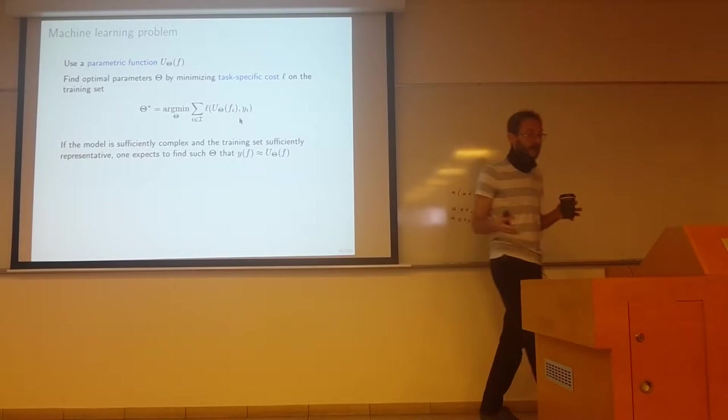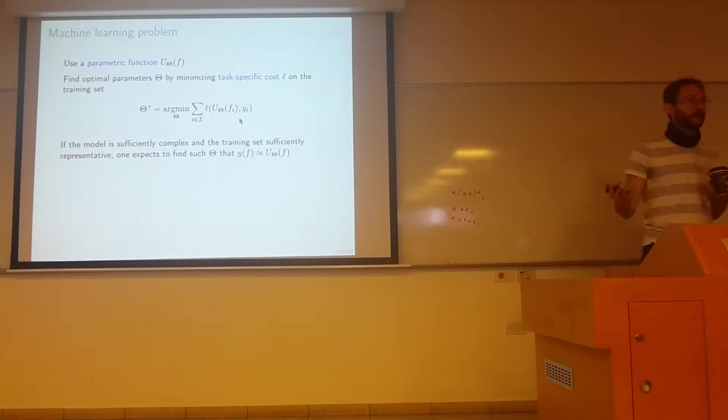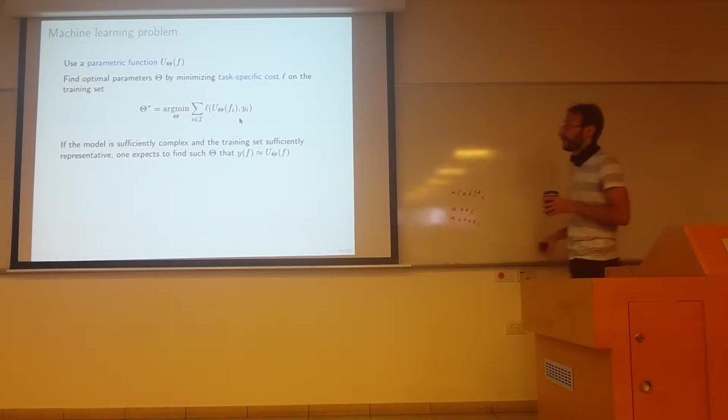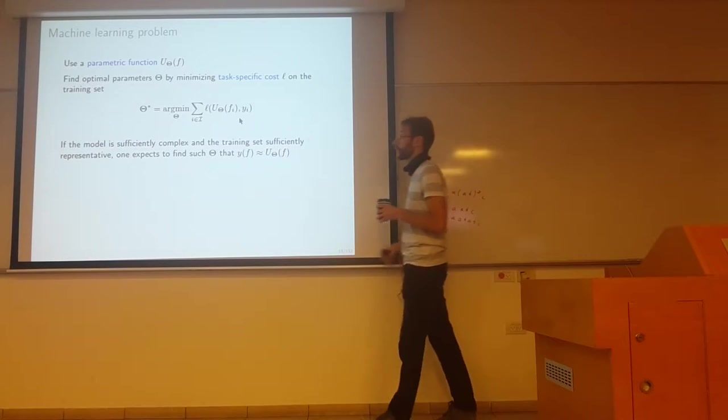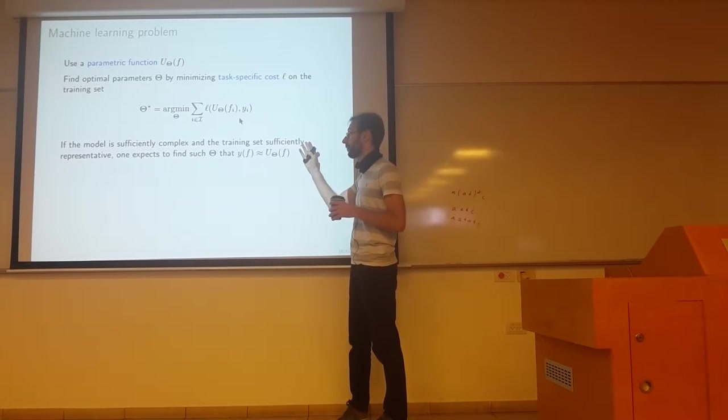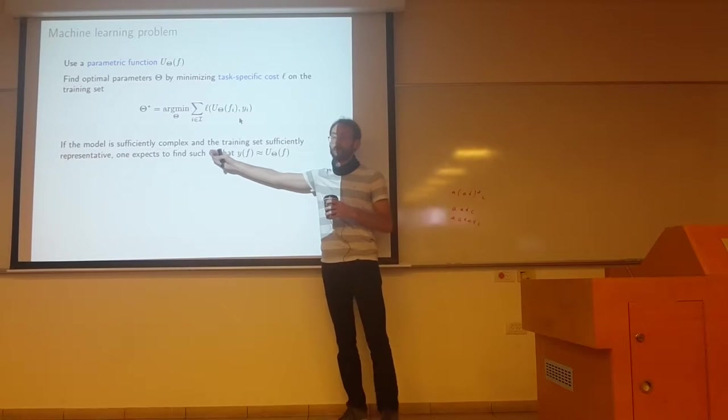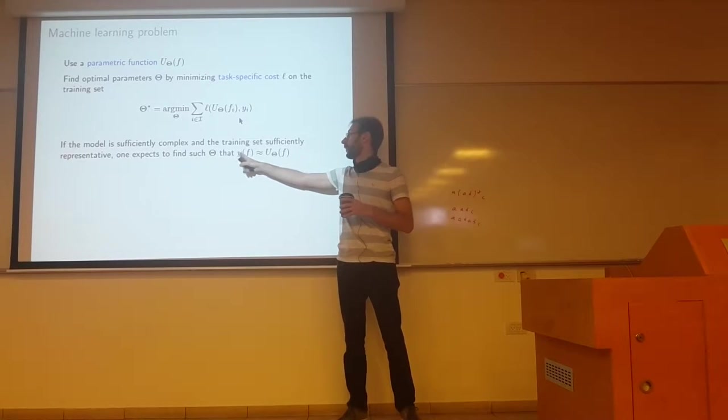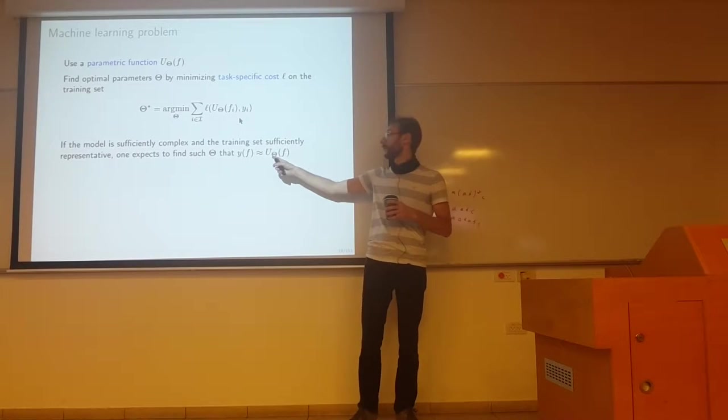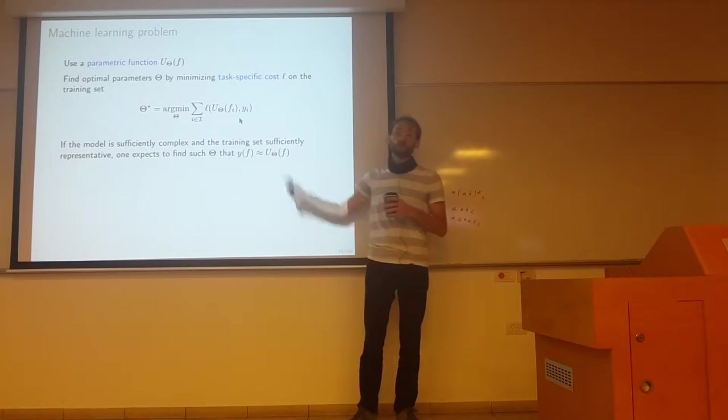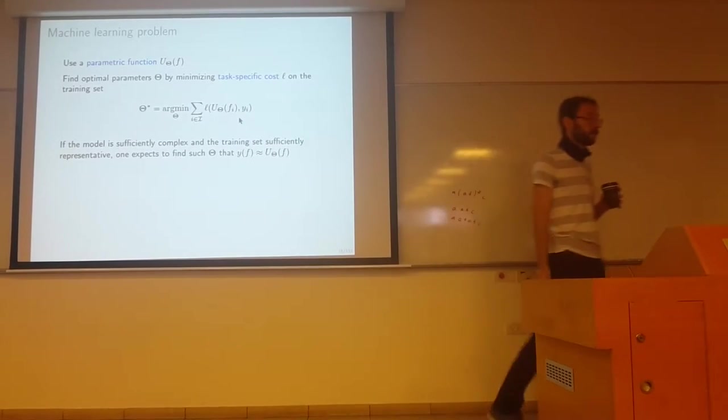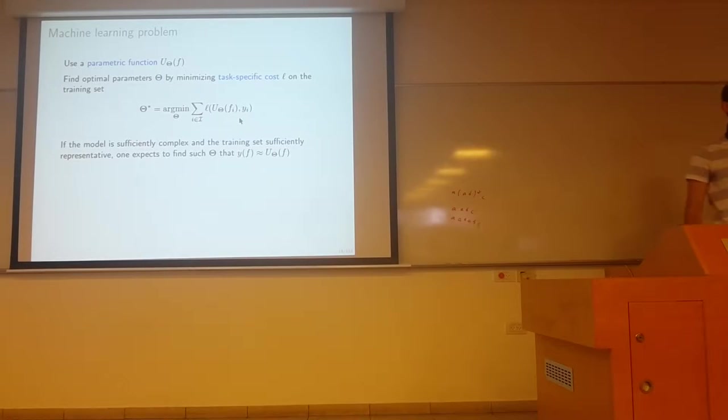Without going into technical details, you can actually prove rigorously that if the model is sufficiently complex in some sense and the training set is sufficiently representative, you expect to be able to find such theta that y applied to f - your ground truth label - is close to what your system u predicts with this set of parameters.